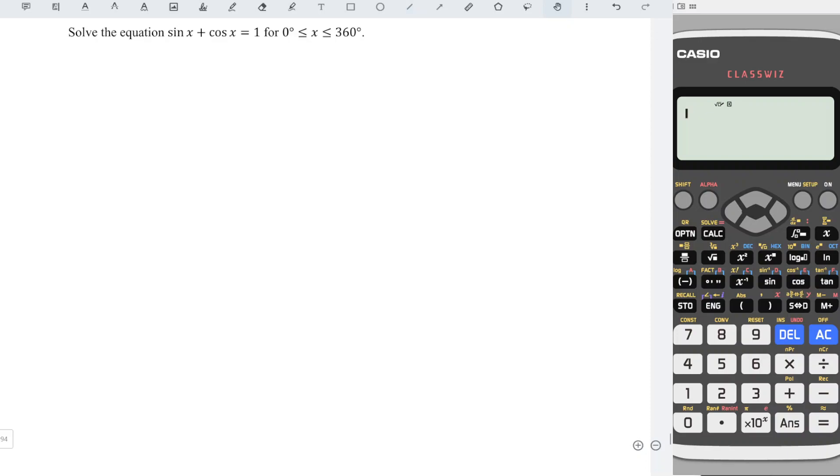I'd like to share how to solve this trigonometric equation using the transformation method. We can first let R sin(x + a) equal sin x + cos x. Expand the left-hand side: R sin x cos a + R cos x sin a equals sin x + cos x.